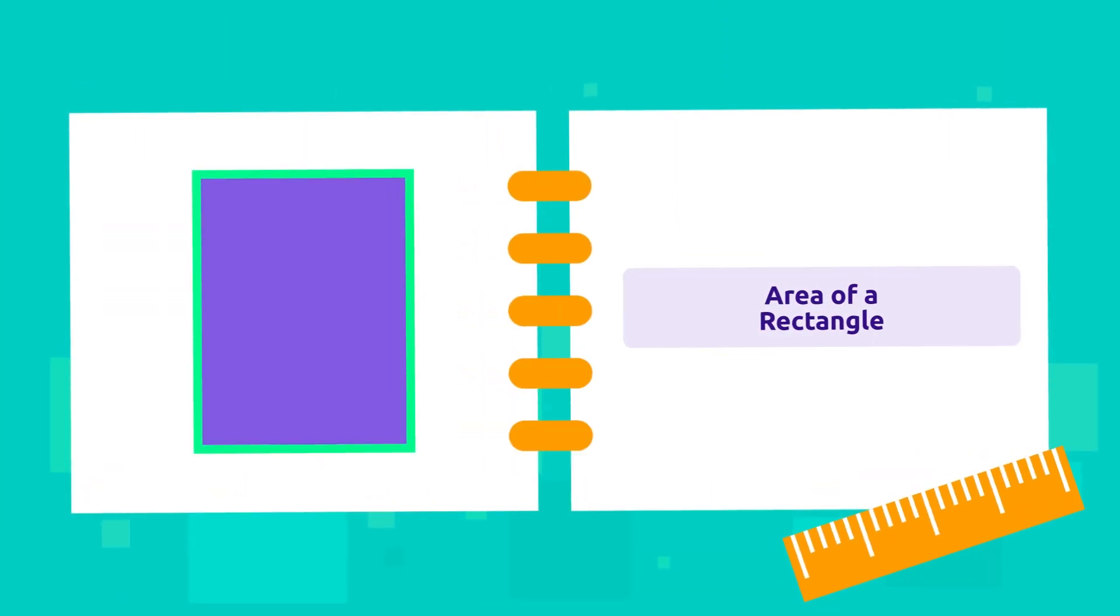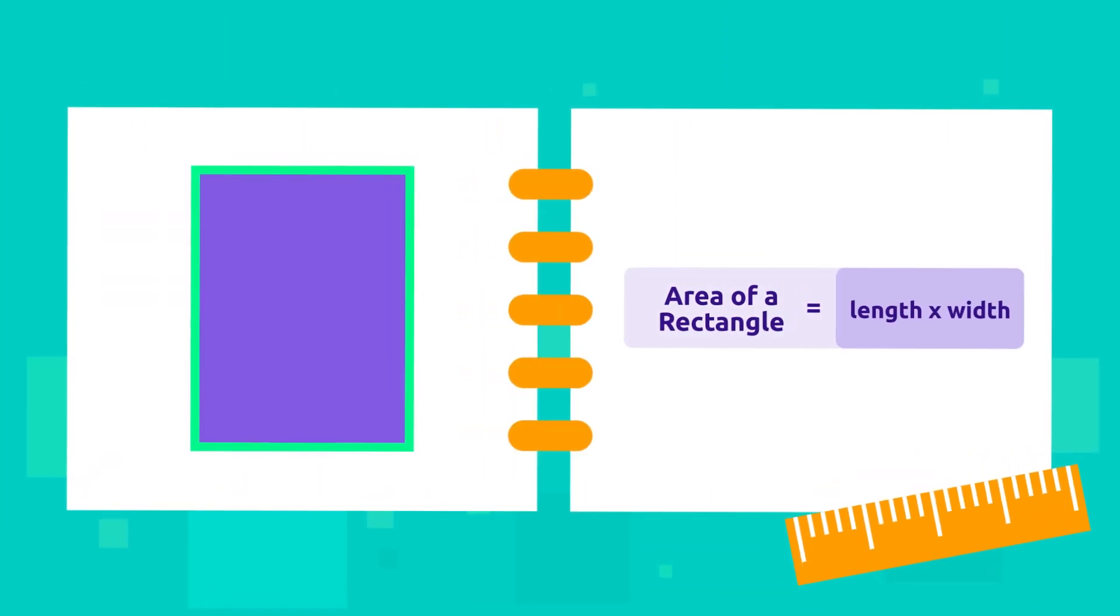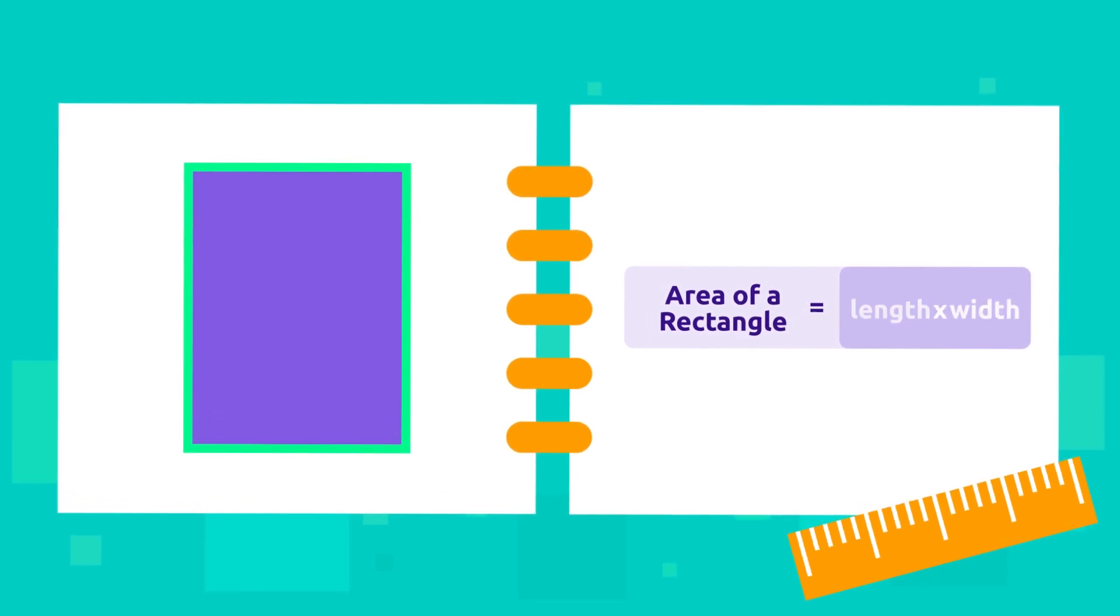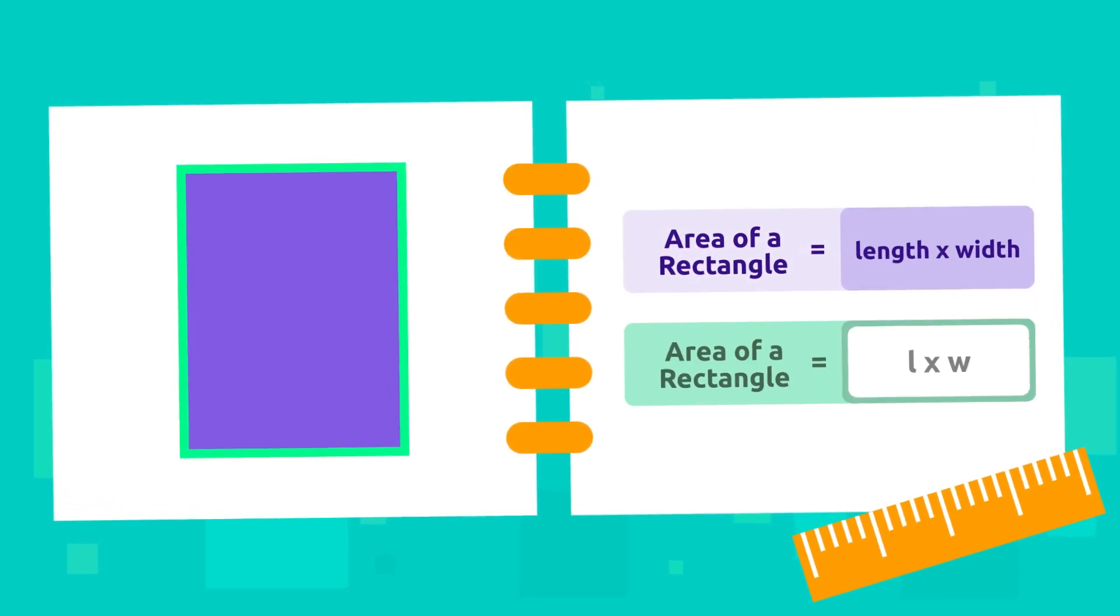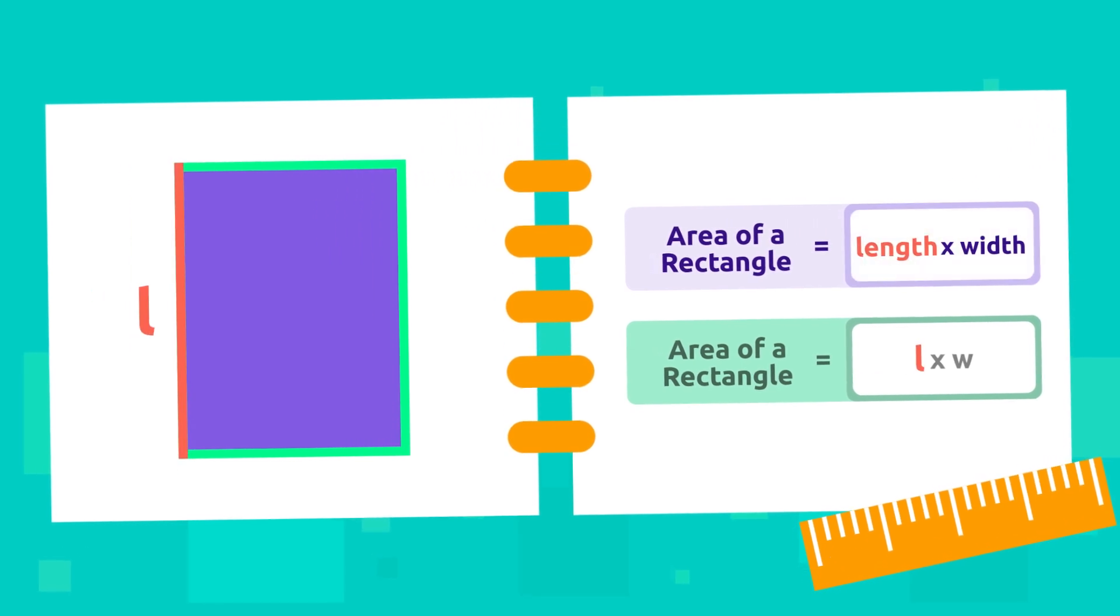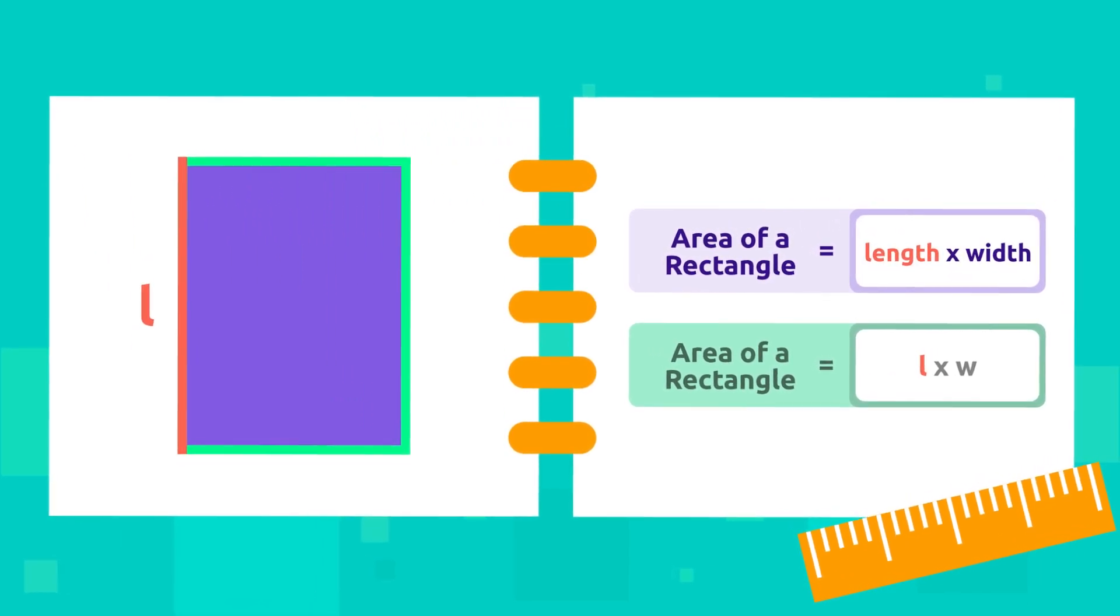To calculate the area of a rectangle, we need to know the formula. Area is equal to length times width. You will see that the length is represented by a letter L, and the width is represented by a letter W.